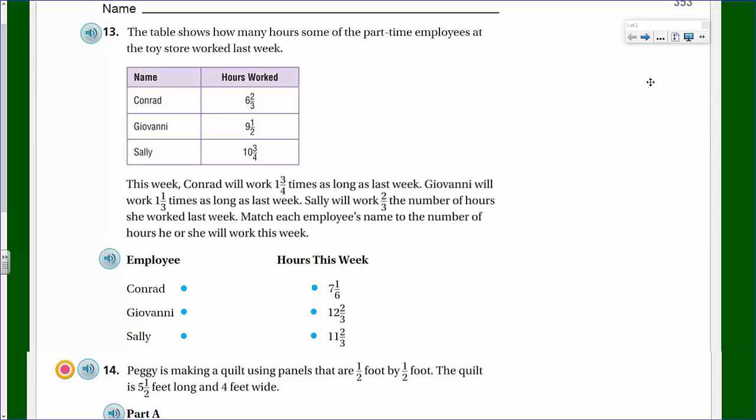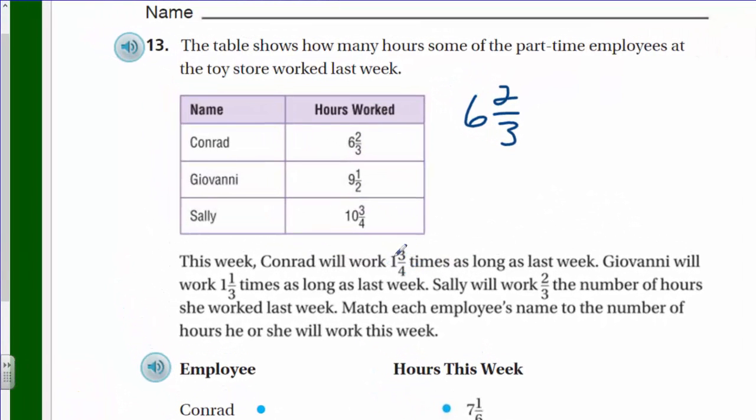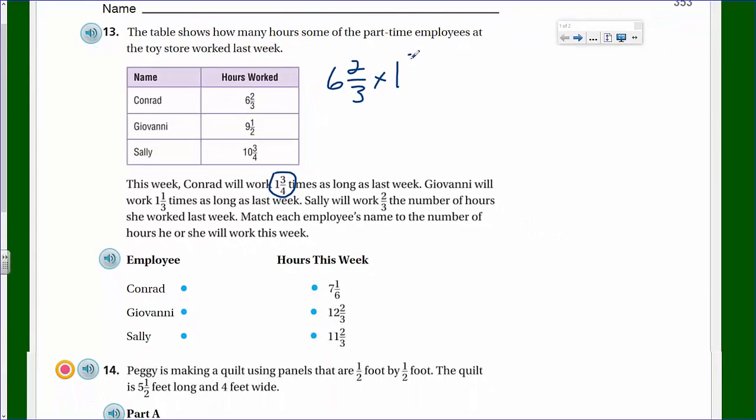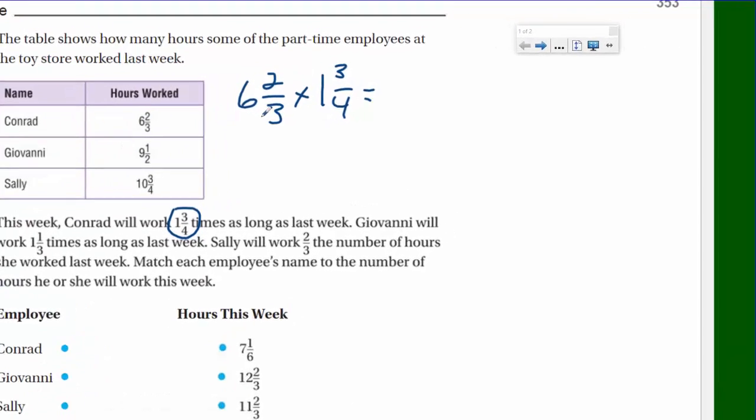I like this problem. Let's go ahead and take Conrad. He worked 6 and 2/3 hours. Now it says he's going to work 1 and 3/4 times as long. This should be an indication right away for you to notice that he's worked more. If he worked one time, it would be the same, exactly the same hours. However, he worked 1 and 3/4, so we should get an answer that is more than 6 and 2/3.